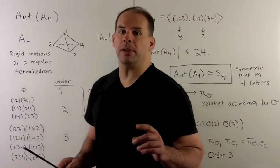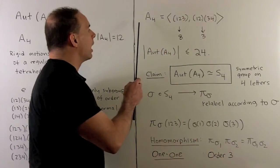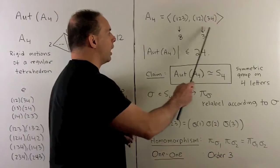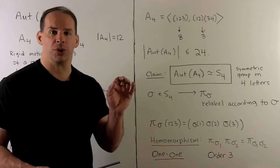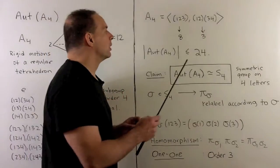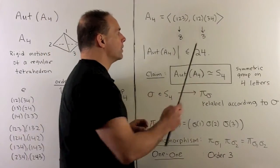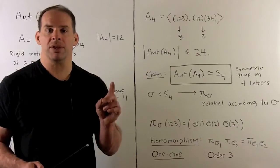Let's note I can generate A4 with two elements. We can use any three cycle and any product of disjoint two cycles. So if we have an automorphism, we have to preserve order of elements.